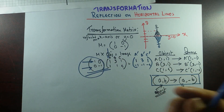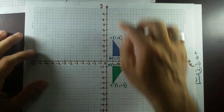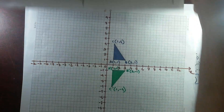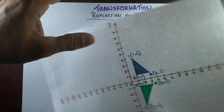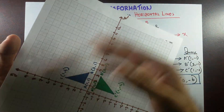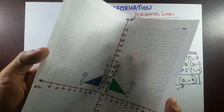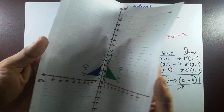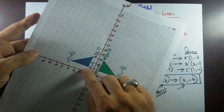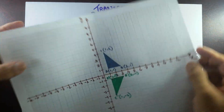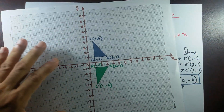If you want to see this on the grid, this is how it looks. Same as before — when we did the transformation on the y-axis, the same thing happens when reflecting on the x-axis. The corresponding points coincide when you fold through the line of reflection.